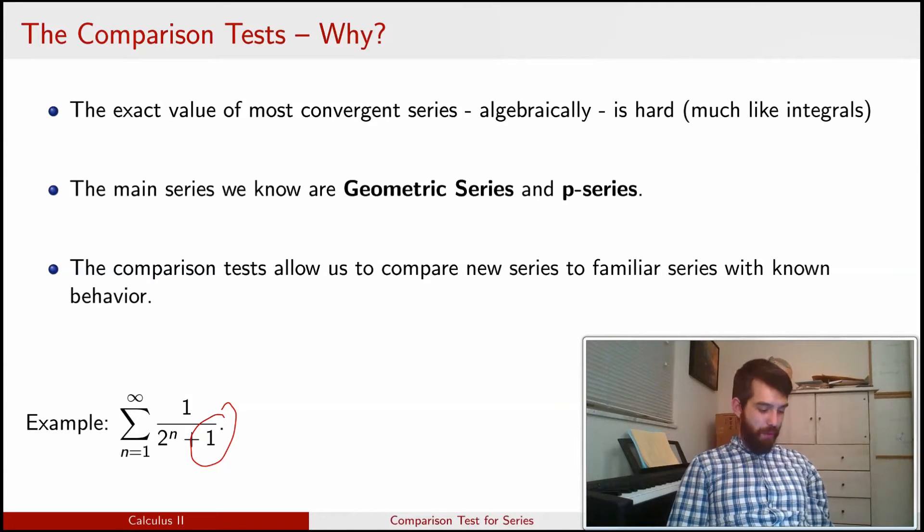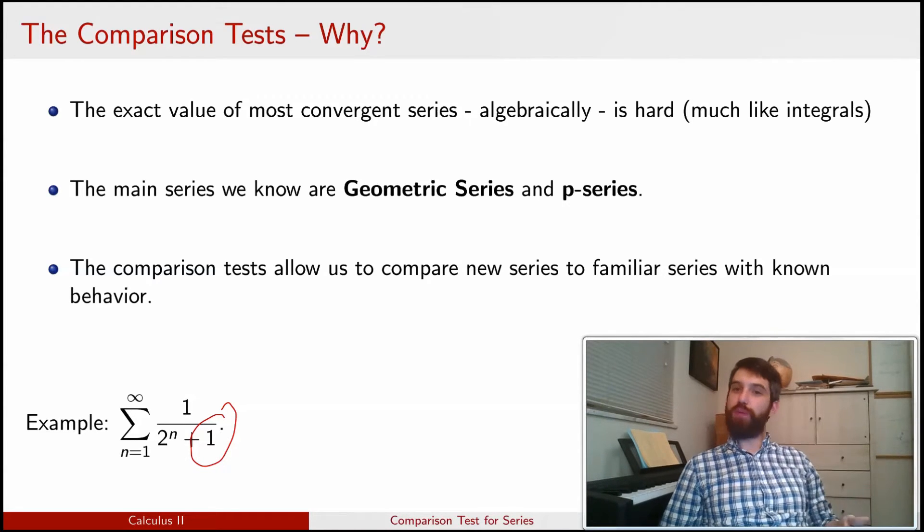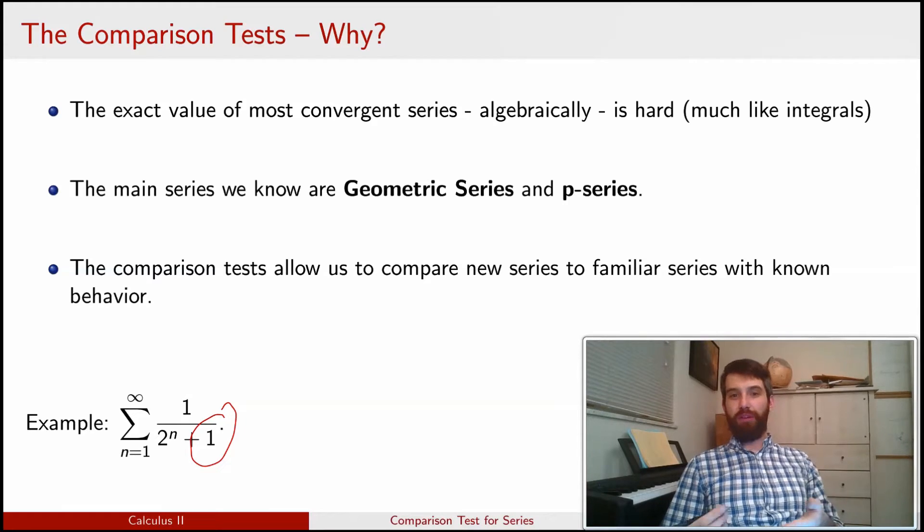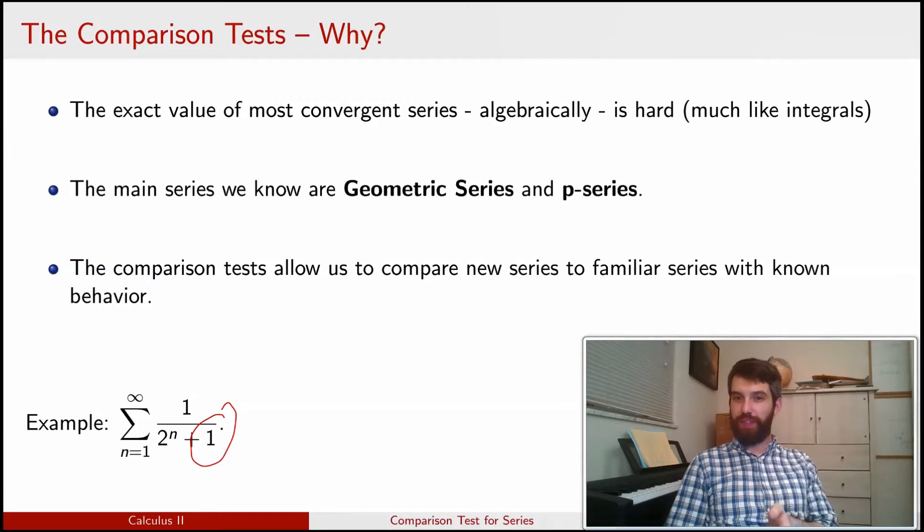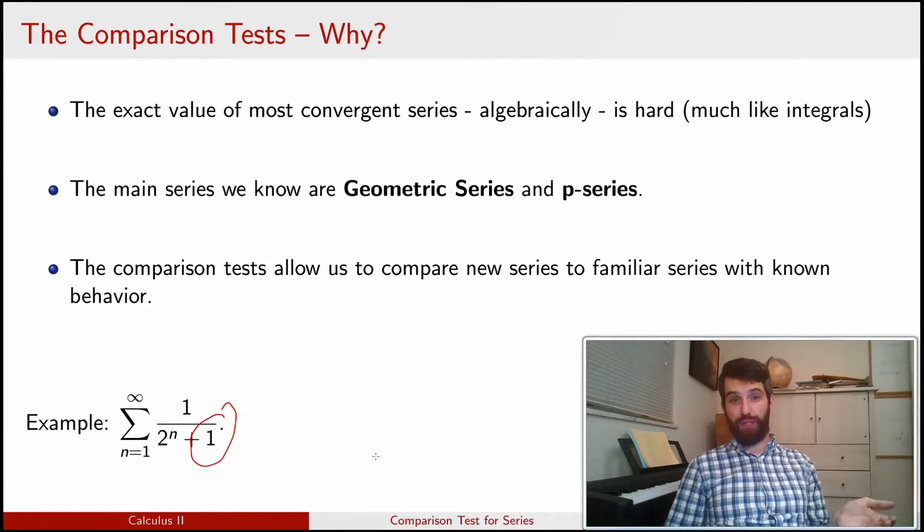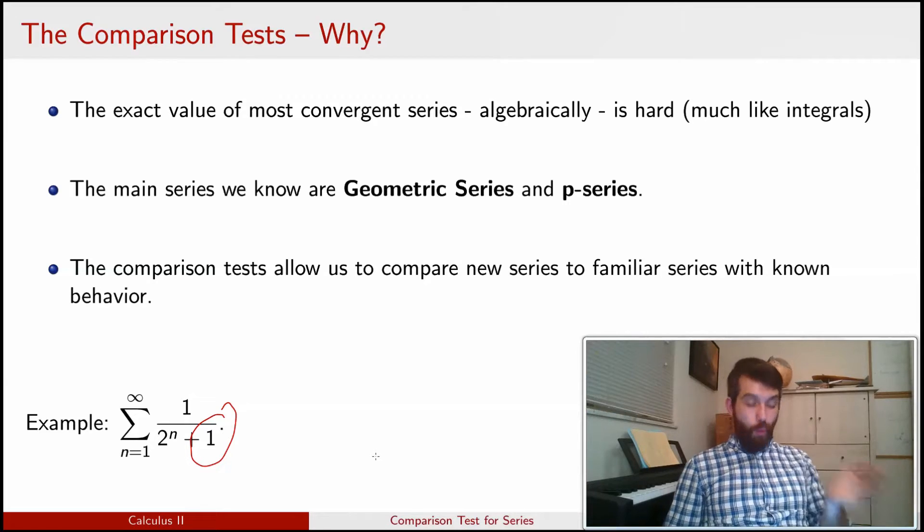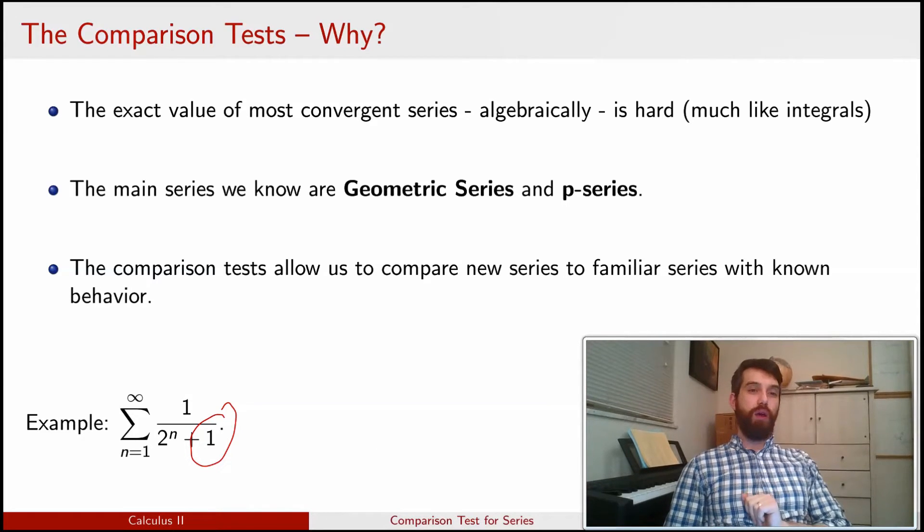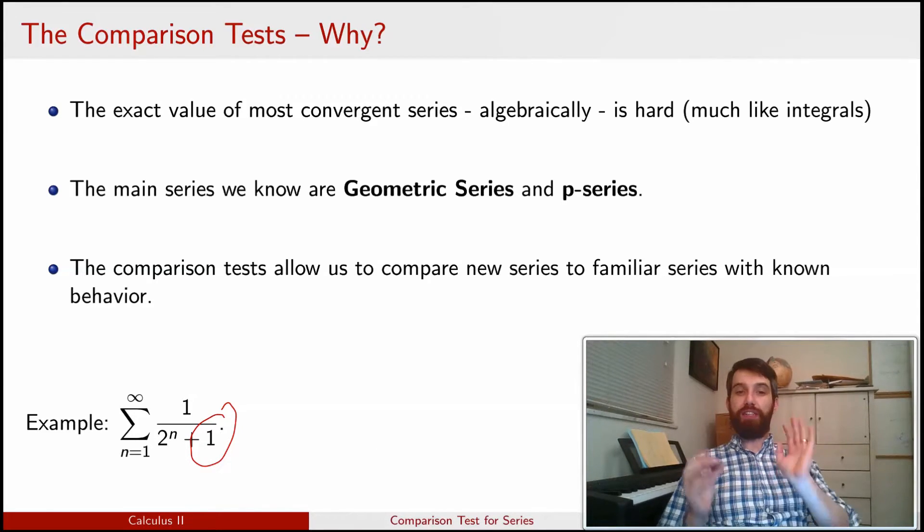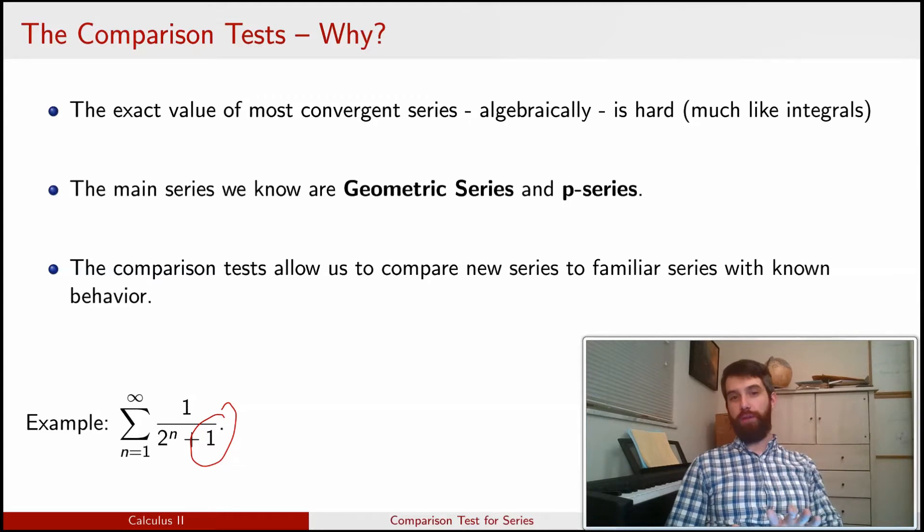Yet, somehow, we don't currently have a way to compute what this value is. Even though we sort of heuristically think the plus 1 doesn't matter because it's completely inconsequential compared to the 2 to the n, we don't actually know how to figure out that this series converges or diverges. But 1 over 2 to the n, I know that one. The sum of 1 over 2 to the n, that's a geometric series, and I know it converges. So I think I should be able to compare the two.